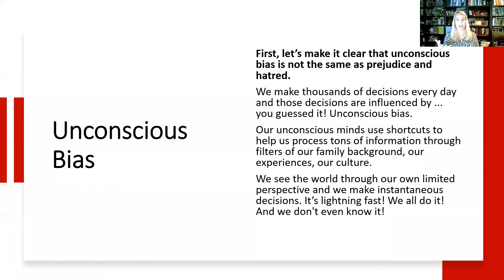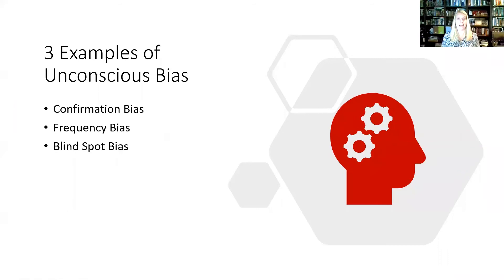It is very important when we think about unconscious bias that there are three important things to remember: unconscious bias happens lightning fast; we all do it — it's how we work as human beings; and most of the time, we don't even know that it is happening. Today we are going to cover three different types of unconscious bias: confirmation bias, frequency bias, and blind spot bias. Each one of these is also covered in our Beyond Tolerance Theater, and all three are examples of unconscious bias.